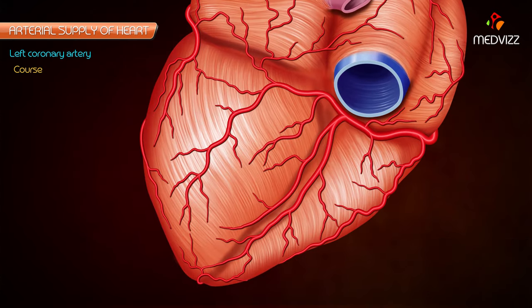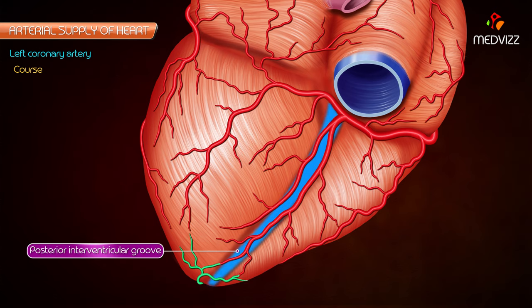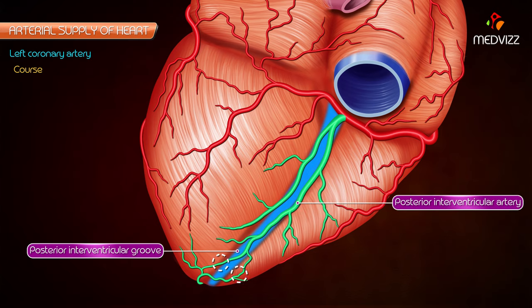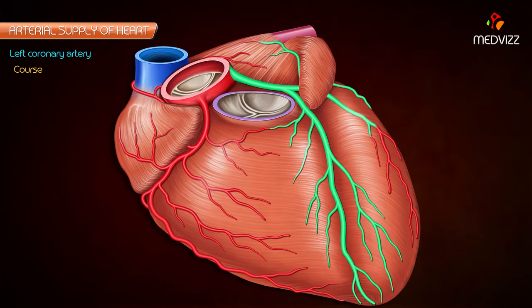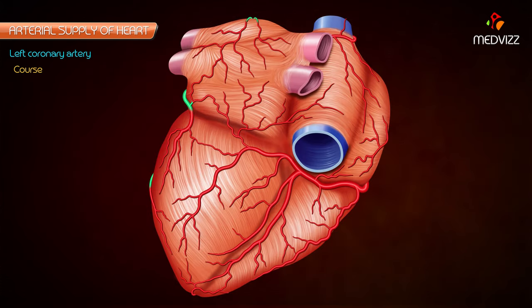The anterior interventricular artery then passes posteriorly around the apex of the heart to enter the posterior interventricular groove, terminating by anastomosing with the posterior interventricular artery, a branch of the right coronary artery. The circumflex artery winds around the left margin of the heart and continues in the left posterior coronary sulcus up to the posterior interventricular groove, where it terminates by anastomosing with the right coronary artery.